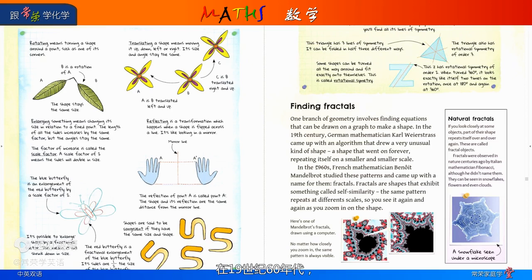In the 1960s, French mathematician Benoit Mandelbrot studied these patterns and came up with a name for them. Fractals. Fractals are shapes that exhibit something called self-similarity. The same pattern repeats at different scales. So you see it again and again as you zoom in on the shape.